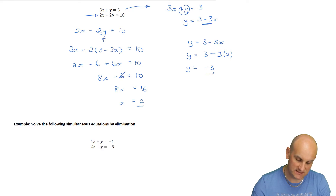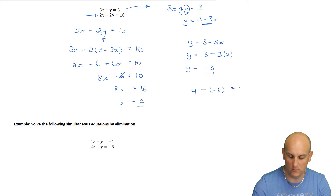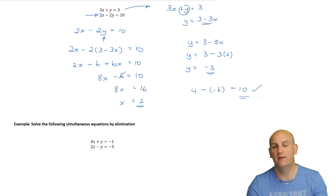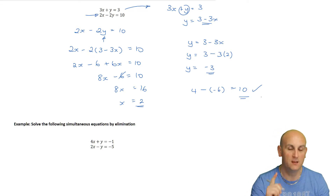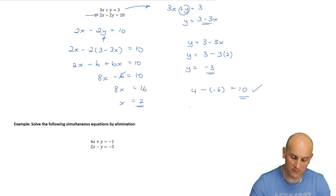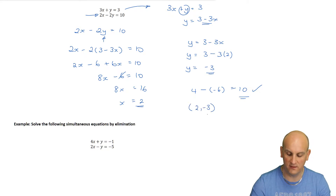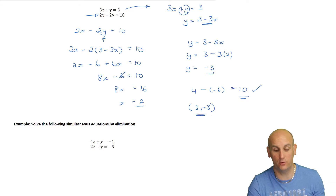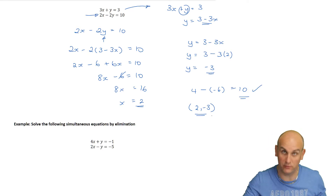Let me check. 2x gives me 4. Minus 2 times minus 3 gives plus 6 - and 4 plus 6 does equal 10, so I'm happy. A word of warning: you need to express your answer as a coordinate. In this situation, therefore, my crossing point is (2, minus 3), because you are finding a coordinate.